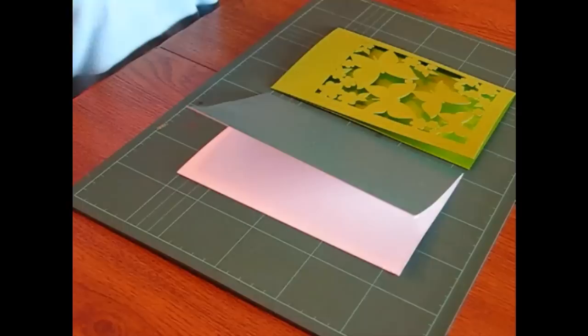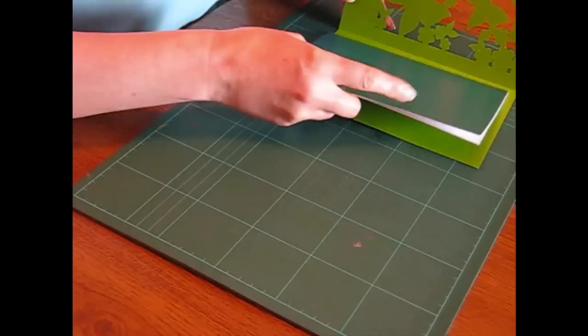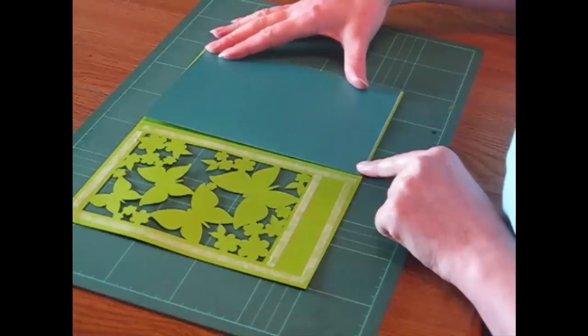Putting the card together is much easier if you put the liner in now rather than waiting until the end. I am using double sided tape to attach mine but use whatever method you prefer. I simply place the liner in position and then stick the card to it and then I repeat again for the back of the card.